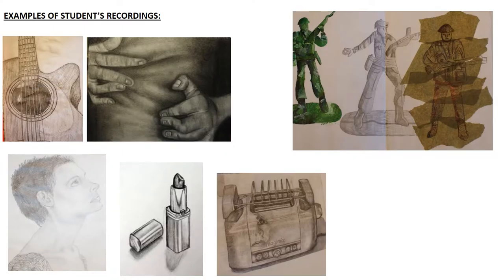Here are some examples of students' recordings. The top left-hand one — a student would have taken a photograph of a guitar and used a portrait-orientation viewfinder over that image. The one next to it, of the figure, shows a landscape-orientation viewfinder used over a photograph. There is excellent, exceptional attention to tonal shading which really brings out the form, and superb attention to finer detail within the skin. This student would have achieved a grade 8.